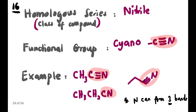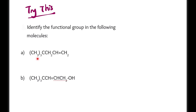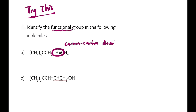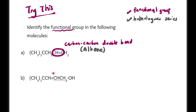Now let's try a practice question: identify the functional group in the following molecules. Looking at the first structure, we can clearly see a C=C double bond — that is the carbon-carbon double bond. The homolog series is alkene. For the second structure, there is both a C=C and an –OH group. Circle and label both: carbon-carbon double bond (alkene) and hydroxyl (alcohol), as one structure can have more than one functional group.